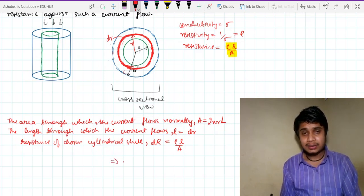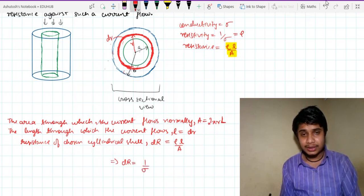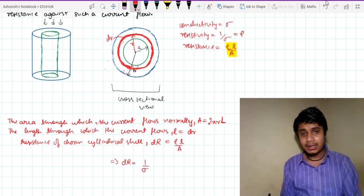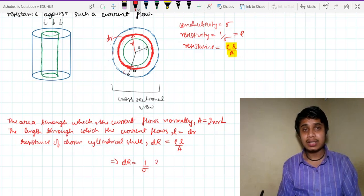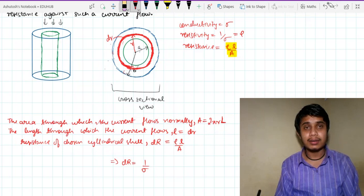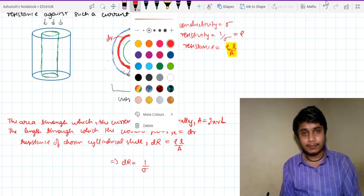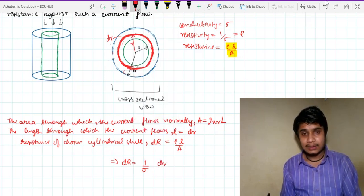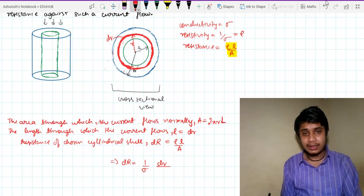So this implies dR is equal to, what is rho? It is 1 by sigma. What is l? It is dr. L is dr and what is A? It is 2 pi r L.